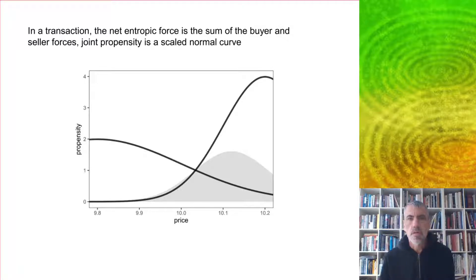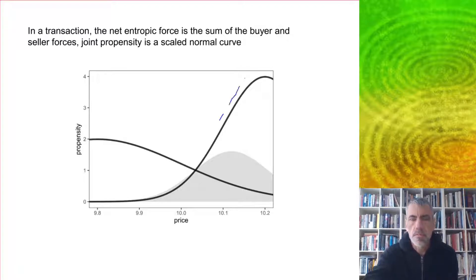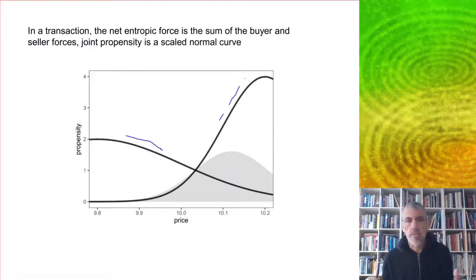What happens when you get a buyer and a seller coming together? The propensity curve for the seller is going to be at a higher price, and the propensity curve for the buyer is going to be shifted towards lower prices. The active part of these curves is near the mid price. If you have the propensity of someone to buy and the propensity of someone to sell at a particular price, then the probability of a transaction occurring is the product of those two things. That turns out to be a scaled normal curve shown here by this shaded area.